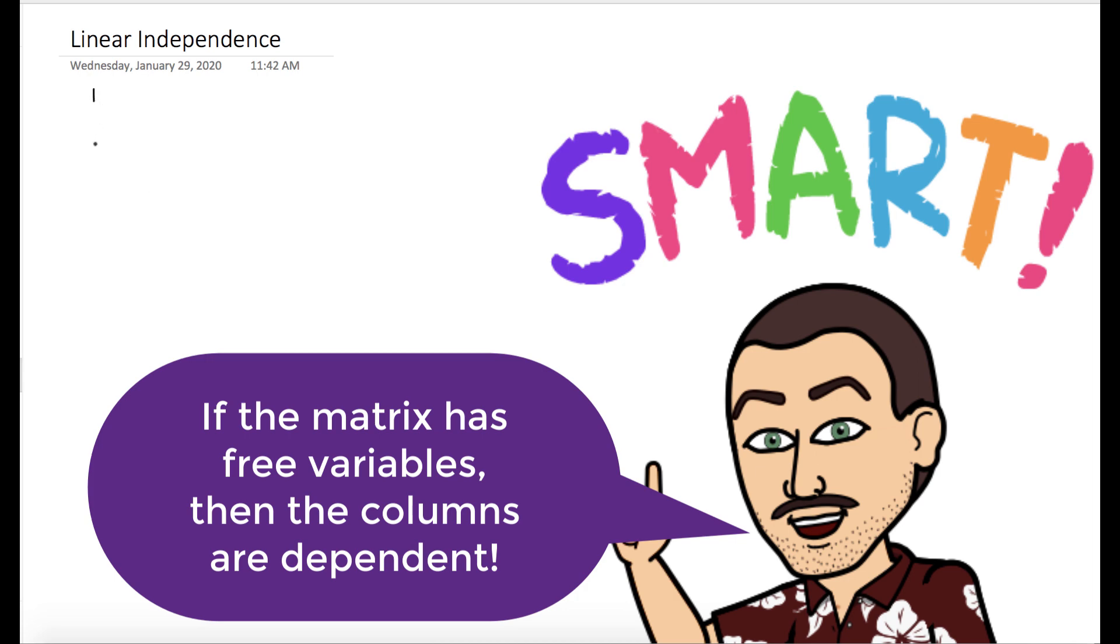So in order for these vectors to be linearly dependent, we just want to show that the matrix formed by grouping all the vectors together has a free variable. And so we're going to figure out which value of h allows us to have a free variable.